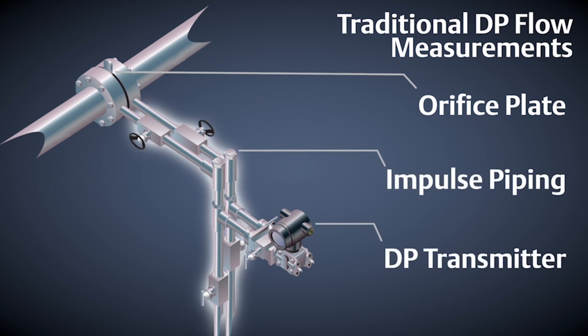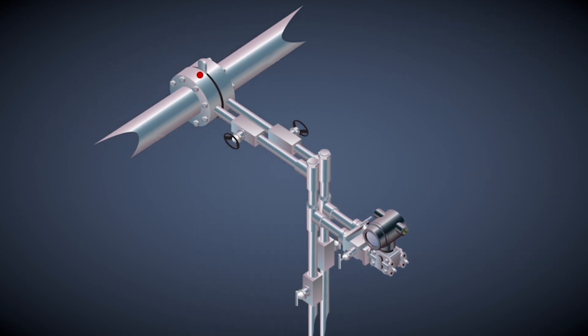The impulse piping and associated fittings are the most costly portion of the installation. There is the potential for leaks, inaccuracies, and inherent safety hazards any time you are using traditional impulse piping. Lost process fluid equates to wasted resources.